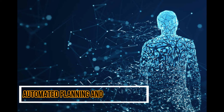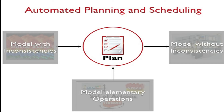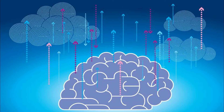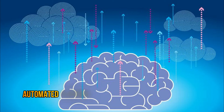Unlike classical control and classification problems, the solutions are complex and must be discovered and optimized in multi-dimensional space. Planning is also related to decision theory. In known environments with available models, planning can be done offline — solutions can be found and evaluated prior to execution.